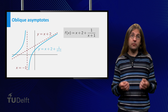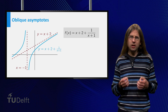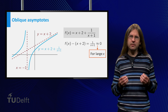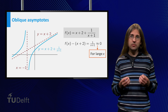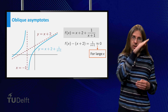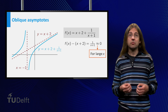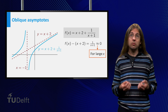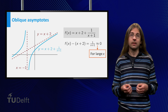Finally, consider the graph of (x plus 2) plus 1 over (x plus 1). For very large values of x, the 1 over (x plus 1) becomes very small and the graph of the function thus approaches the line y equals x plus 2. Similarly for very large negative x, the line y equals x plus 2 is called an oblique asymptote.